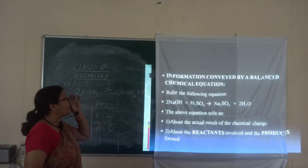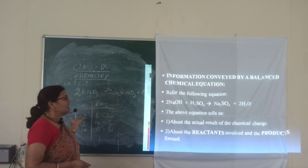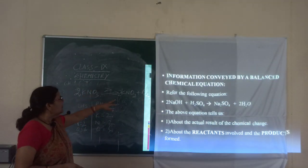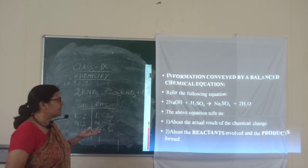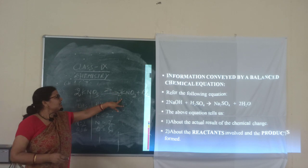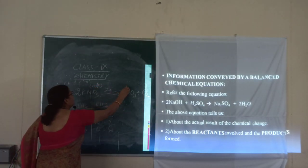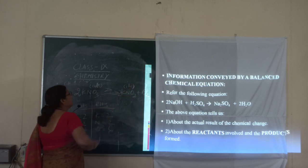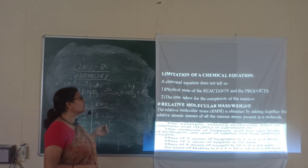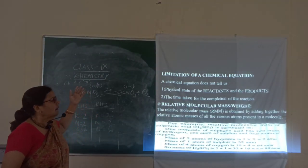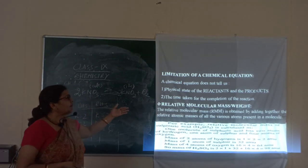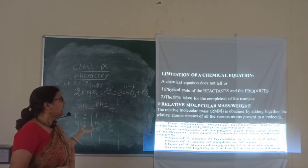These equations are giving about the actual result of the chemical change — about the reactants and products. The reactant is potassium nitrate (KNO3, suffix 'ate'), which when heated converts into potassium nitrite (KNO2, suffix 'ite'). Some of the limitations — that means drawbacks — are that the physical state (gas, liquid, or solid) is not given, and the time taken for the reaction is also not given.